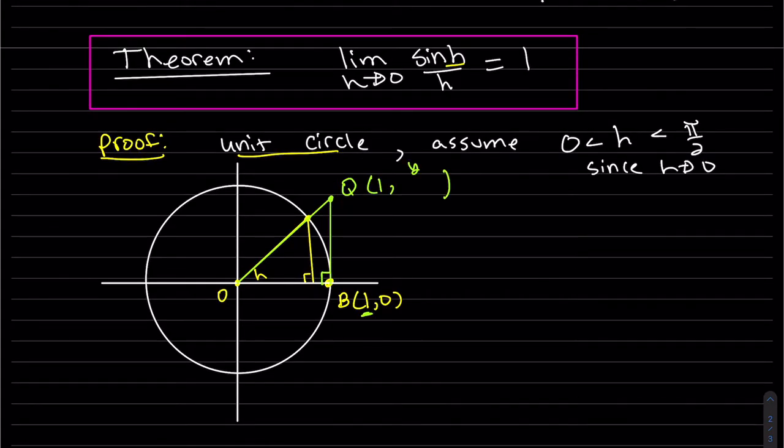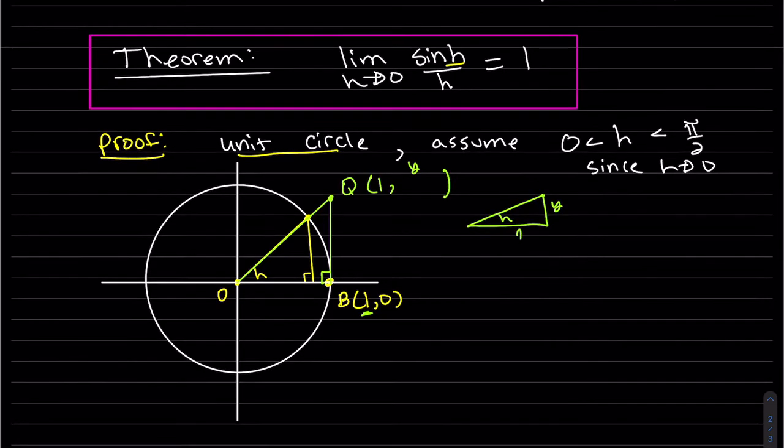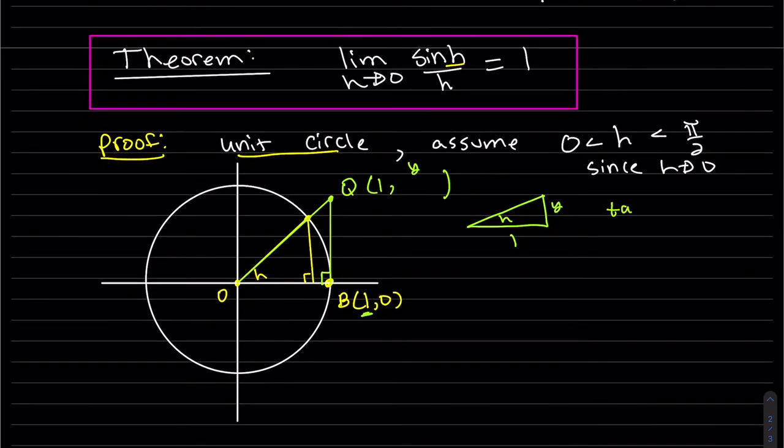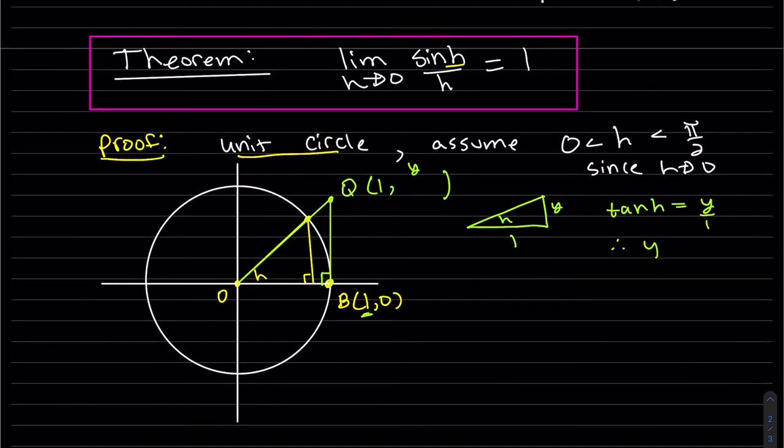So we do go one to the right, straight up, it's my triangle. And our height is y, but we're going to find that in a second. So if we look at this triangle, we have h, y, and one. And we say the tan of h is equal to y over one. Therefore, y is the tan of h. So there we go. And this point here, P, which is (cos h, sin h).